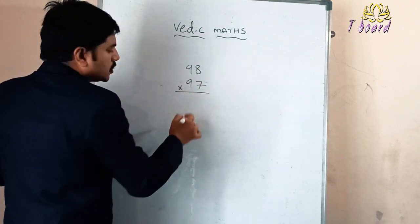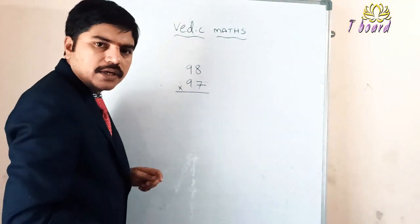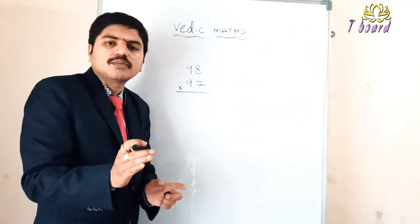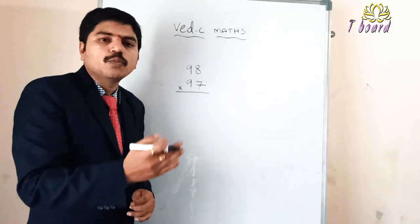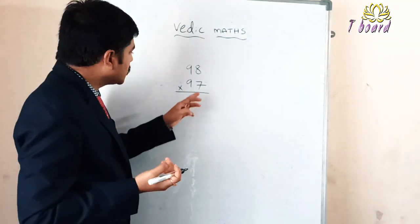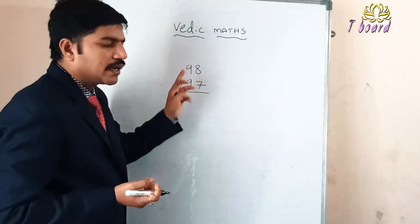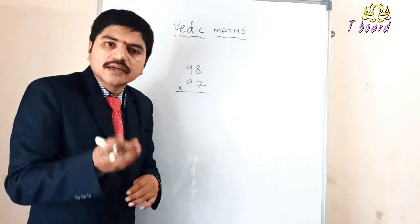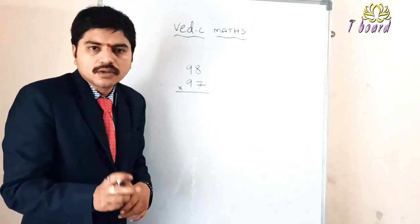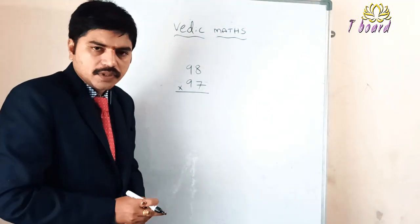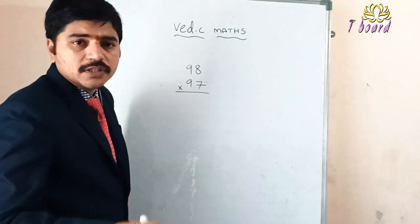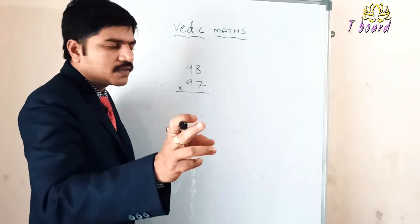This calculation we need to calculate in traditional mathematical wise. It takes some time. Whatever it will be, how many people know the calculations: 7 times 8, 7 times 9, 9 times 8, 9 times 9. After that you should add 2 to 3 steps.